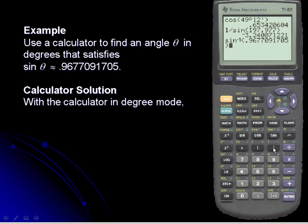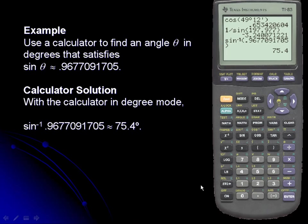I'll close off the argument for the arc sine and hit enter. We see that an angle with a sine value of approximately 0.96 has an angle measure of approximately 75.4 degrees.